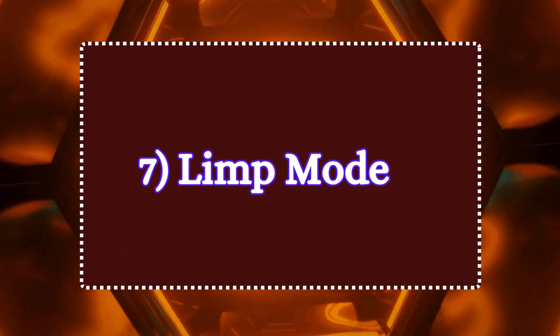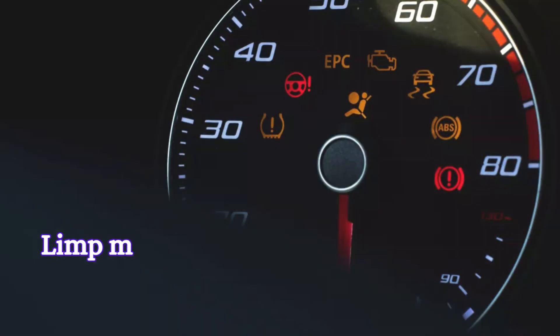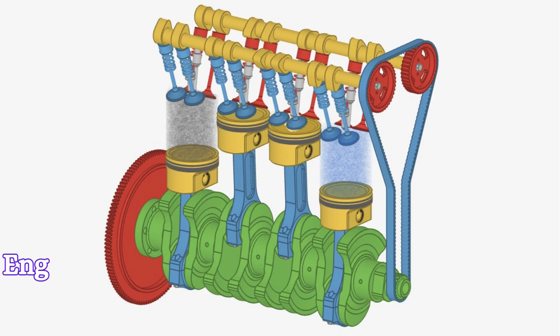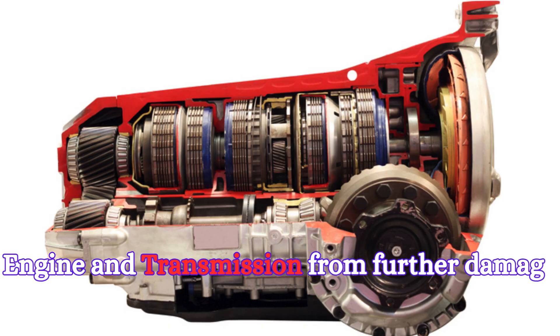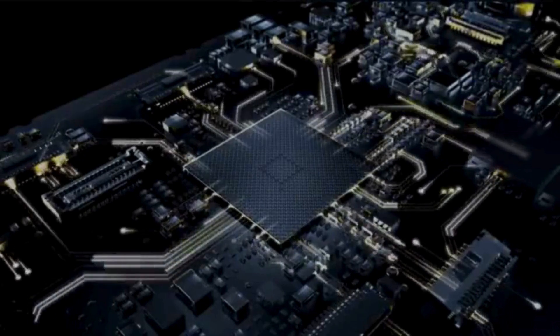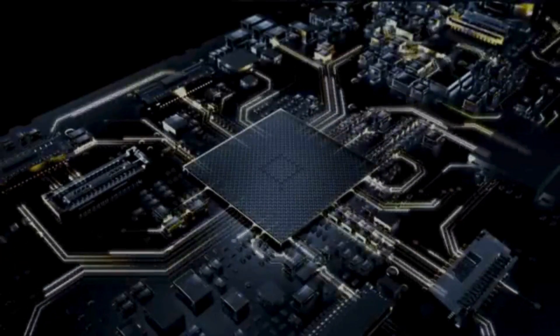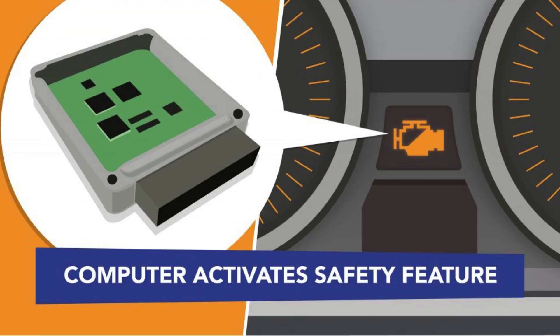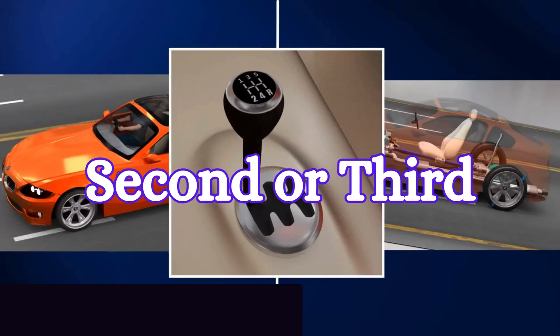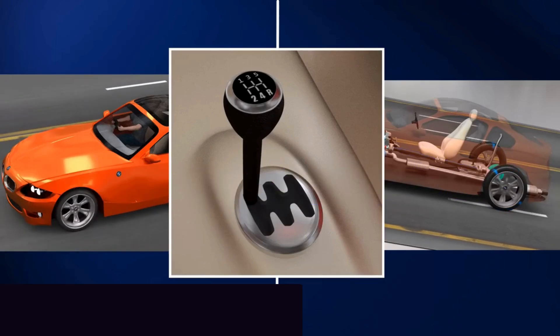Seven, limp mode. Limp mode is a safety feature in modern vehicles designed to protect the engine and transmission from further damage when a serious issue is detected. When the transmission control module detects a problem with the shift solenoid, it triggers limp mode. The transmission may be locked into a single gear, often second or third, to prevent further shifting issues.